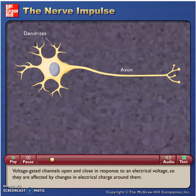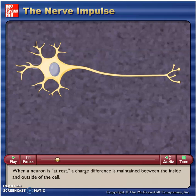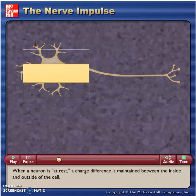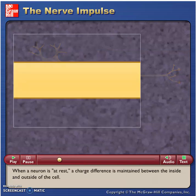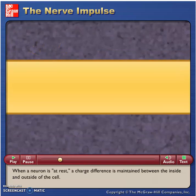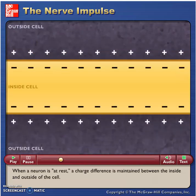Voltage-gated channels open and close in response to an electrical voltage, so they are affected by changes in electrical charge around them. When a neuron is at rest, a charge difference is maintained between the inside and outside of the cell.